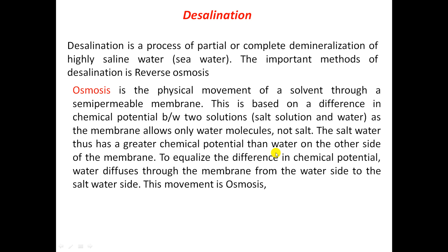the saltwater thus has greater chemical potential than water on the other side of the membrane. To equalize the chemical potential, water diffuses through the membrane from the water side to the saltwater side. That means water is moving from the lower concentration side to higher concentration side through the semipermeable membrane. This is called osmosis.